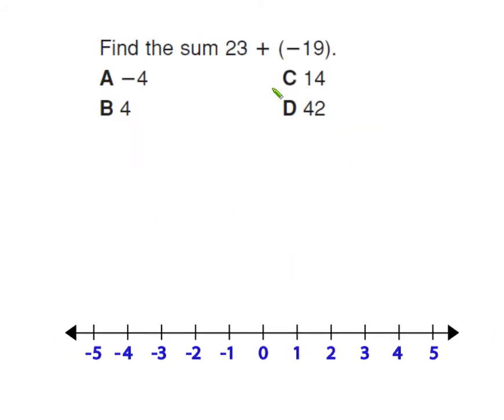Okay, find the sum here. So when we're adding integers, if they have the same sign, sign's the same, so negative 4 plus negative 5 would be negative 9. But if the signs are different, we find the difference, bigger guy wins. When we say find the difference, we really mean of the absolute value.